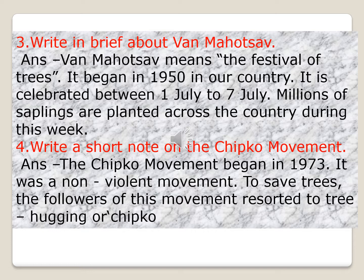Number four: write a short note on the Chipko movement. The Chipko movement began in 1973. It was a non-violent movement to save trees. The followers of this movement resorted to tree hugging — Chipko. Whenever someone came to cut trees with weapons and heavy machines, the forest dwellers would hug the trees, and since they could not kill the people, the trees were saved. That is why it was called Chipko. The people who started this movement were awarded the Right Livelihood Award in 1987.